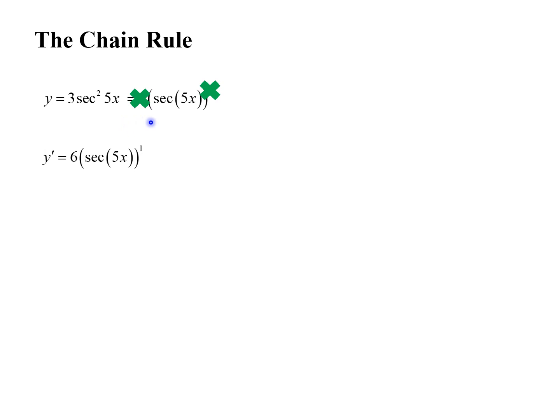Now we take the derivative of the secant of something, because the secant is the next thing on the outside. The derivative of secant of something is secant something times tangent something. That takes care of the secant, so we cross it out. Now we take the derivative of the inside part: the derivative of 5x is 5, and that takes care of the whole problem.